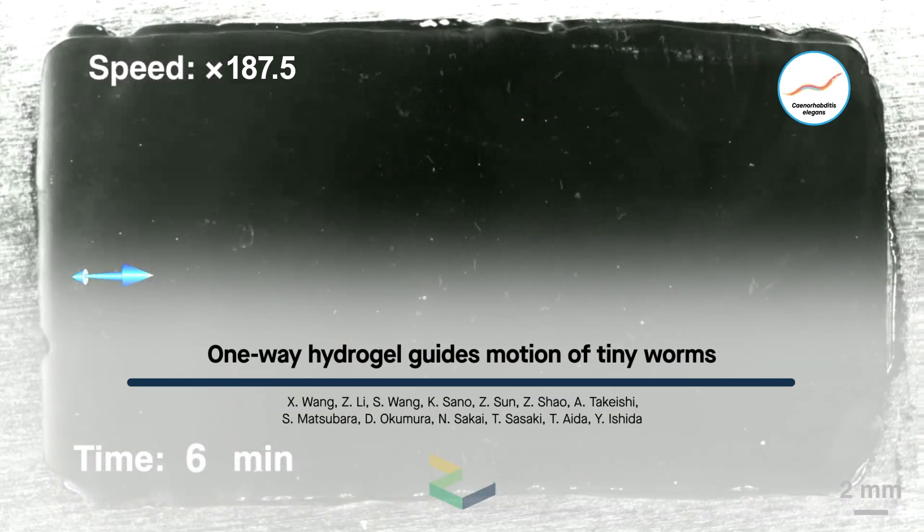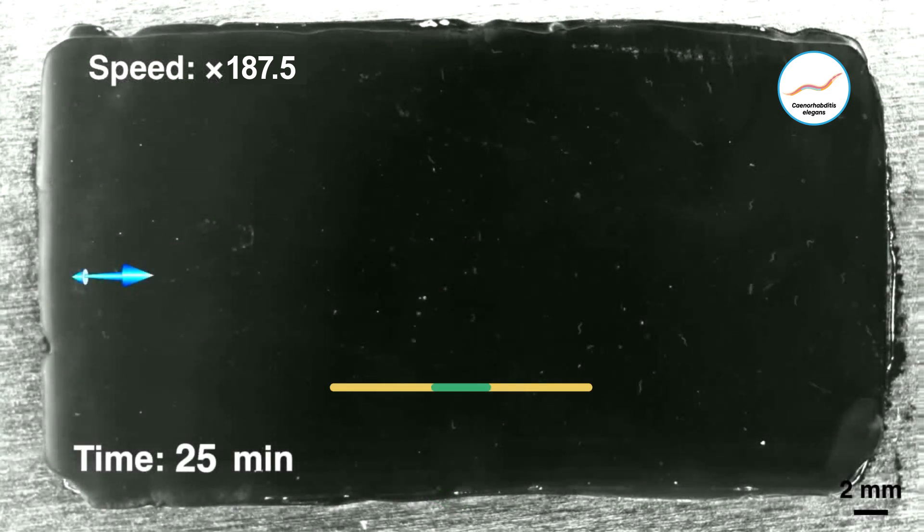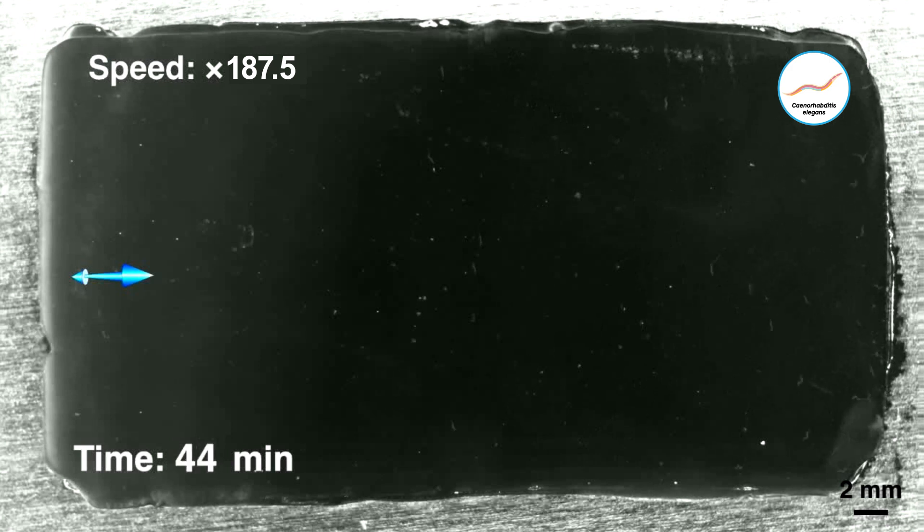These tiny worms appear to be doing something funny. Their movements, although random, are propelling them all in the same direction across a flat material. How does this worm conveyor work, and how might it help scientists build more efficient machines?